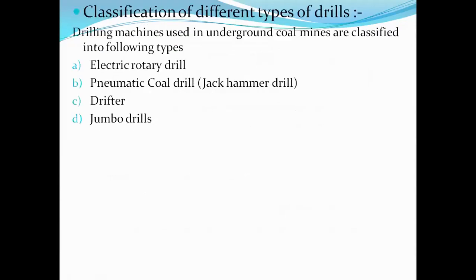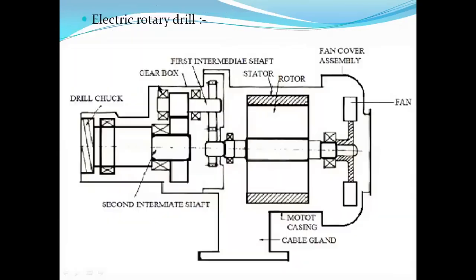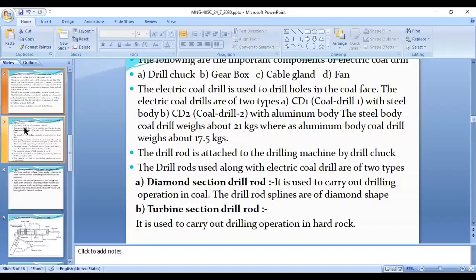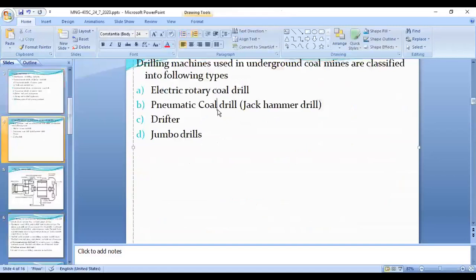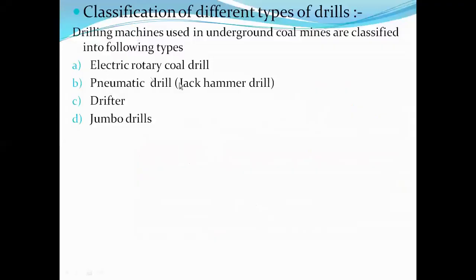Coming to the classification of drilling machines — drilling machines used in underground coal mines are classified into the following types. Number one is the vertical electric rotary drill, also called the electric coal drill. The second type is the pneumatic drill, also known as the jackhammer drill, because it will be used not only in coal but also in hard rock. So it is called the electric rotary coal drill.